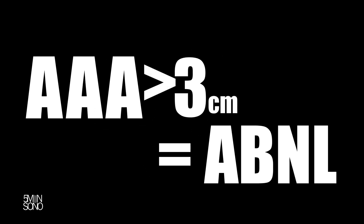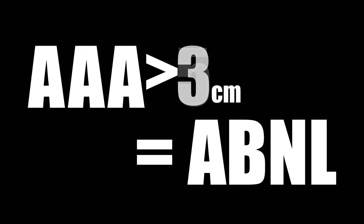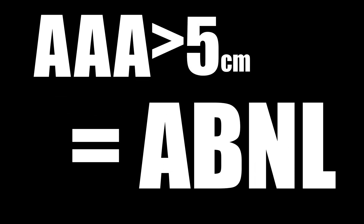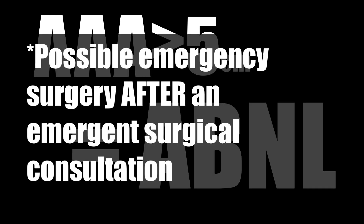Now let's talk about the abdominal aortic aneurysm. If you have trouble remembering what the abnormally enlarged number is — AAA is three letters, three centimeters is considered abnormally enlarged. Many places state to look at the abdominal aorta and measure it at its most proximal, mid, and just above the iliac bifurcation. If your patient has an AAA greater than five centimeters, that is considered very abnormal — somebody who needs emergent surgery compared to a patient with one that is less than five centimeters.